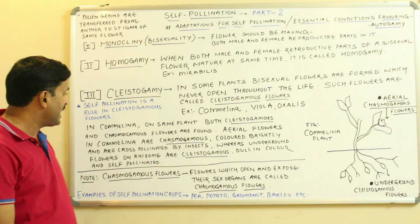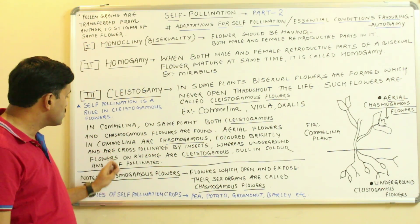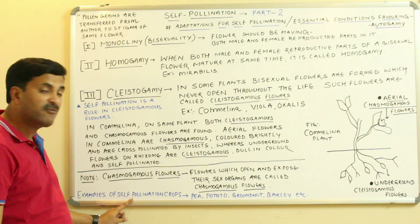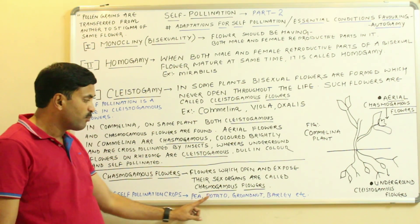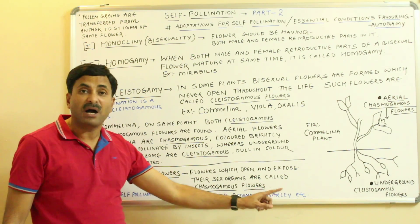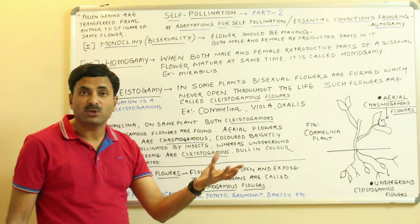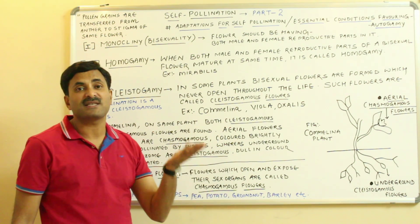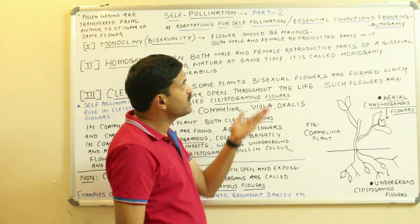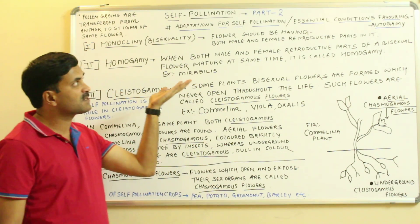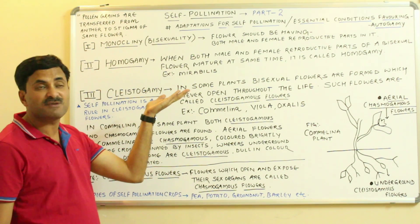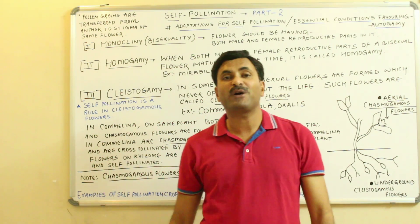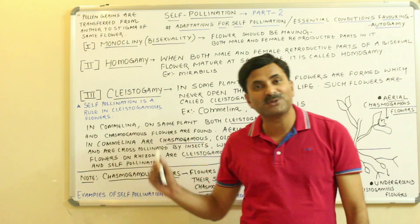Finally, the crops which are self-pollinated include pea, potato, groundnut, barley, tobacco, and tomato. This video covered the essential conditions favoring autogamy. Thanks for watching — you can take a screenshot of this video if needed.